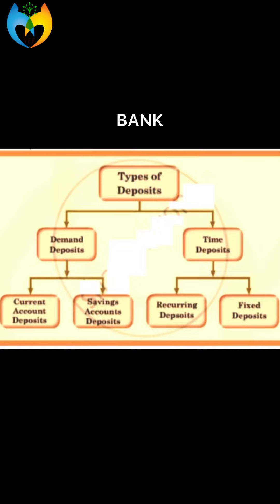With the given diagram, I would like to explain the types of deposits in a bank. There are two types of deposits: demand deposits and time deposits. Demand deposits are deposits which can be withdrawn as and when demanded — that is, the withdrawal is not time bound. Demand deposits are further classified into two types: saving account deposits and current account deposits.